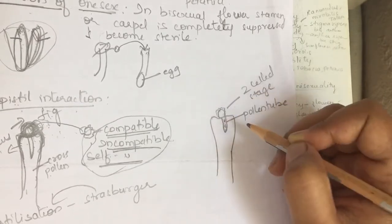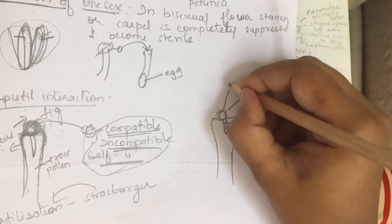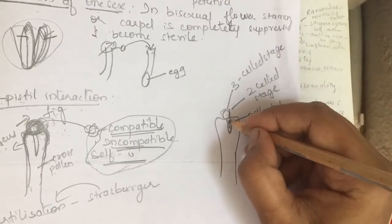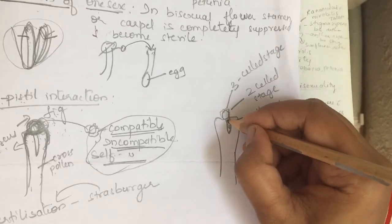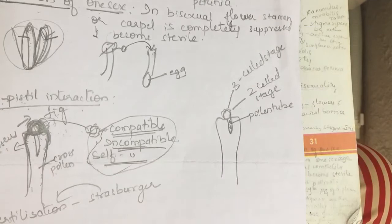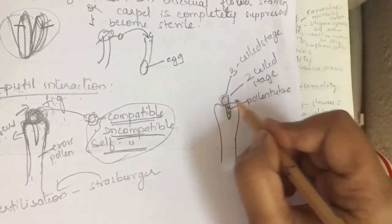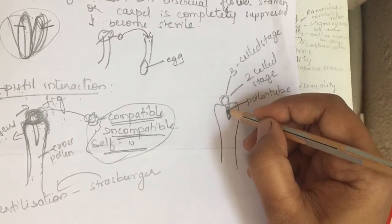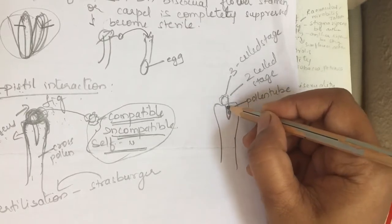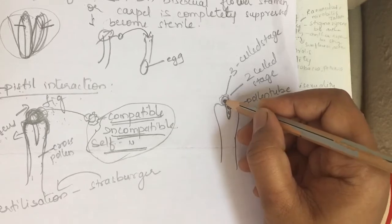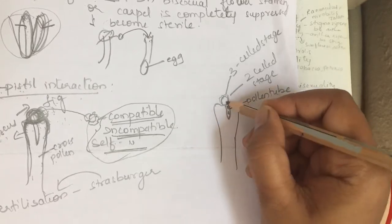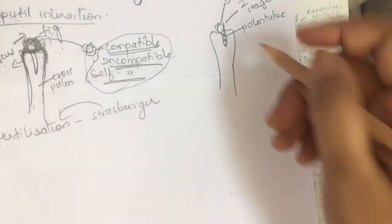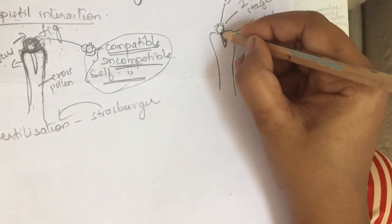If the pollen grain is of the three-cell stage, then directly two male gametes will be released into the pollen tube. So, to summarize: if a two-cell stage pollen grain reaches the stigma, after forming the pollen tube as germination begins, the generative cell divides to form two male gametes. If it is a three-cell stage pollen grain, directly two male gametes are released into the pollen tube. Then the pollen tube starts to grow in its length.